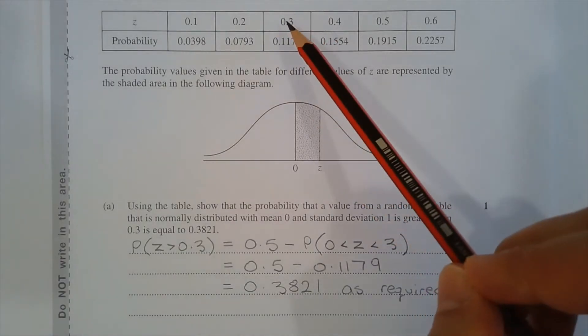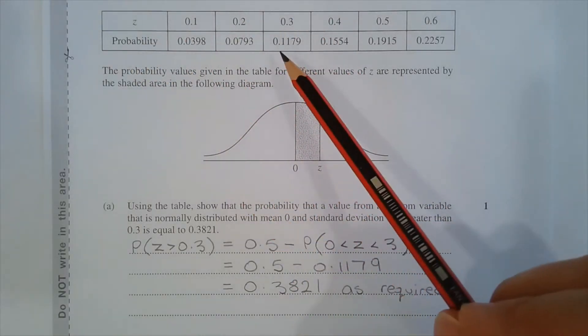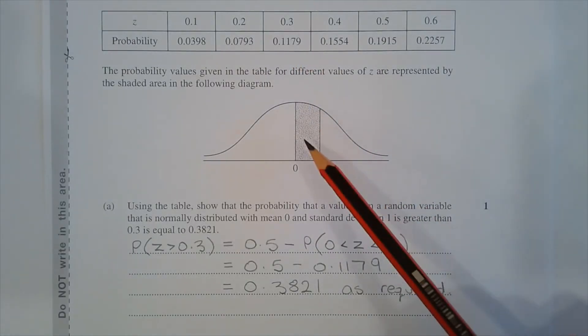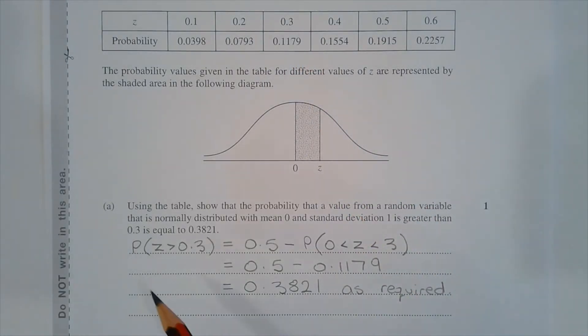Referring to the table where z equals 0.3, the probability is 0.1179, represented as the shaded area in the diagram. So the probability that z is greater than 0.3 equals 0.5 minus 0.1179, which equals 0.3821 as required.